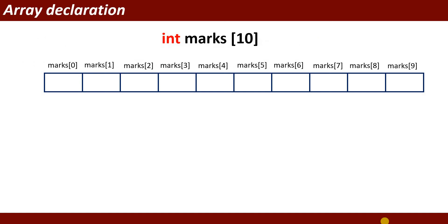Suppose I have written 'int marks[10]'. This is the array declaration. I have declared an array. The array data type is int, array name is marks, with 10 elements. The first element of the array is accessible through index 0. We write the name of the array along with the index number — for example, marks[0].